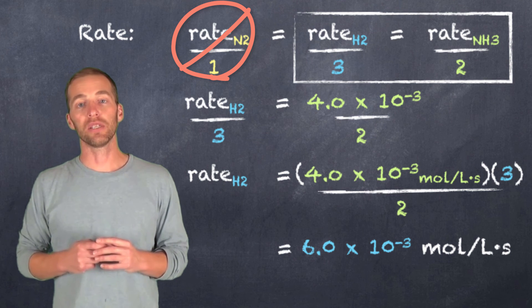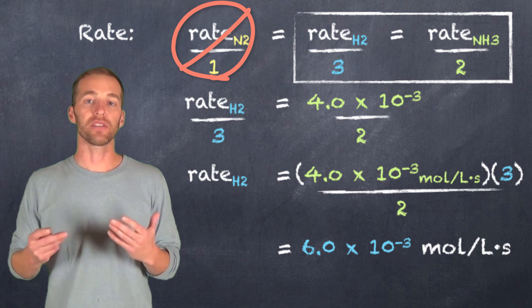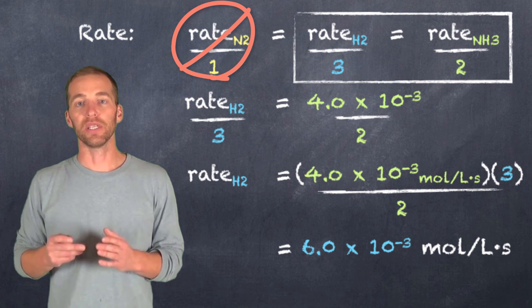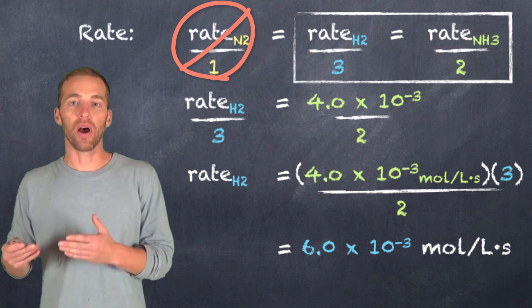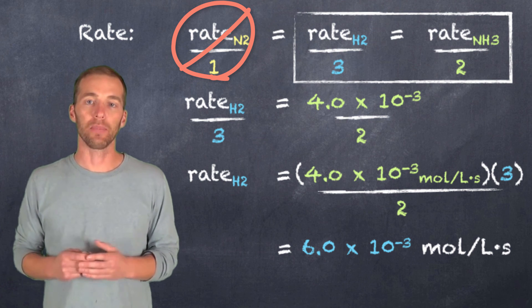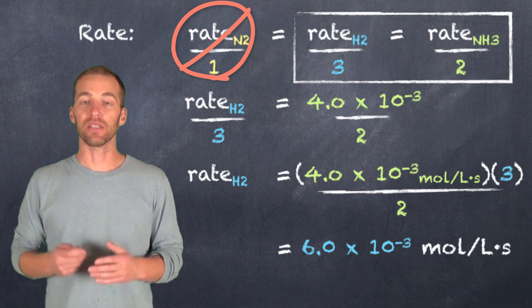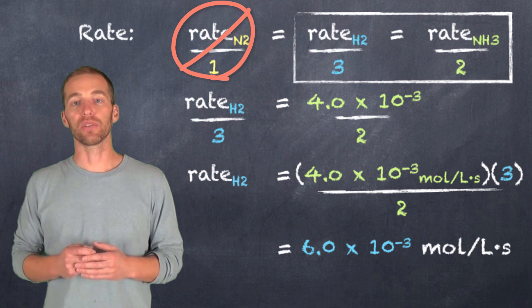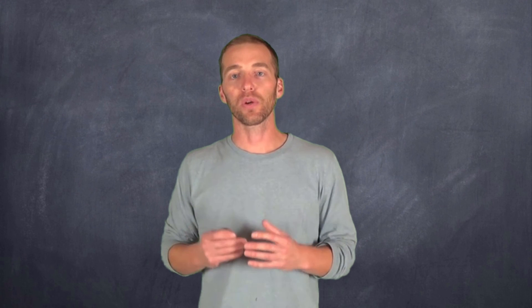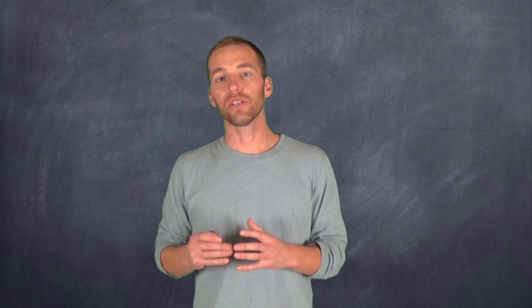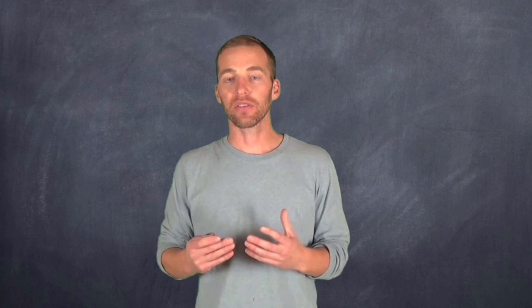The important thing to note is that rates are always expressed as positive values — we talk about the rate of reactant consumption and the rate of product production, always as positive values. This has been a quick introduction to establishing relationships quantitatively with rate. Next, we'll look at the relationships between rate and the amount of substance, and how we can control and better understand the rate of a reaction. Thanks for watching!